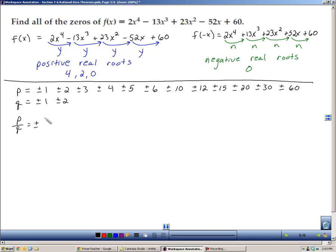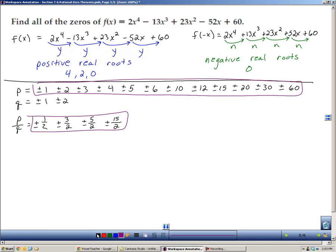which means we have to include plus or minus 1 half. That's a potential root. 2 over 2 is a 1, which is already on my list. 3 over 2 is one I have to put. 4 over 2 is a 2, which is already on my list. 5 over 2 is not, so I have to add that. 6 over 2 is a 3, which is there. 10 over 2 is a 5. 12 over 2 is a 6. 15 over 2 has to be added. And the rest of them are even. When you divide them by 2, you get one that's already on the list. So all of my potential roots come from this list and this list. Those are all the potential numbers that are going to be roots.